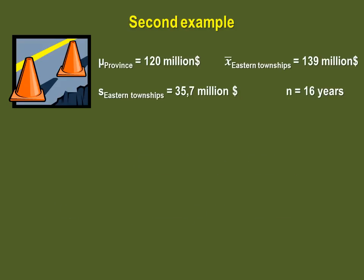Step 3 is stating the level of significance. Since nothing else was mentioned, we choose again alpha to be equal to 0.05.